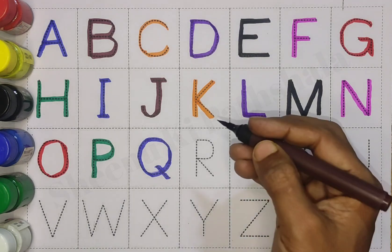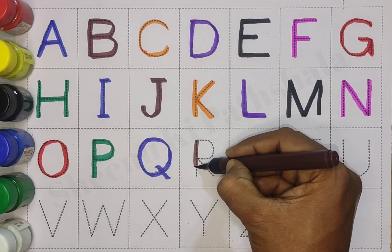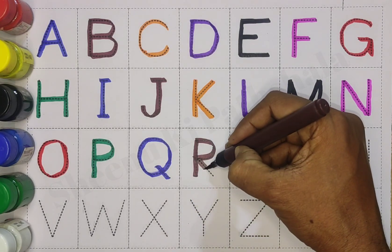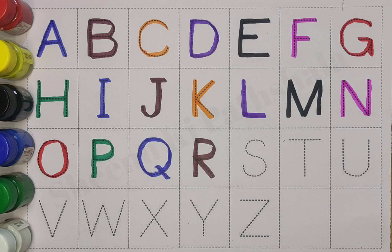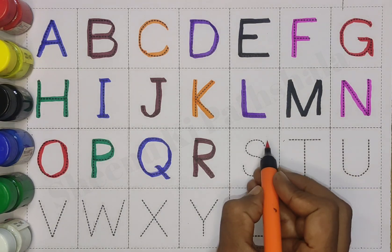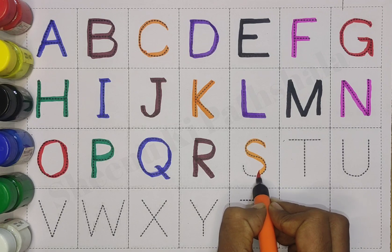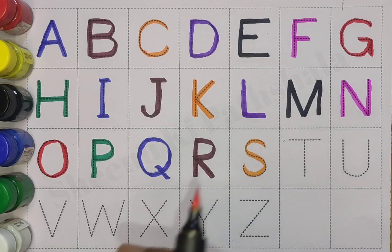Brown color. R for rat. Orange color. S for sun.